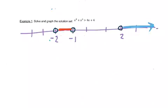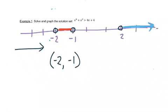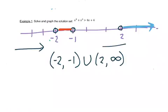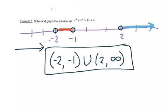Now that we've got this done, we need to go back and write it in interval notation. Remember, we read the number line from left to right. The first number we get to is negative 2 — it's not included, that's what that open circle meant, so we have a parenthesis. And then it stops at negative 1. Then we keep going, and the next part we get to is 2, and that goes forever. Put a U between them, and here's our final answer.